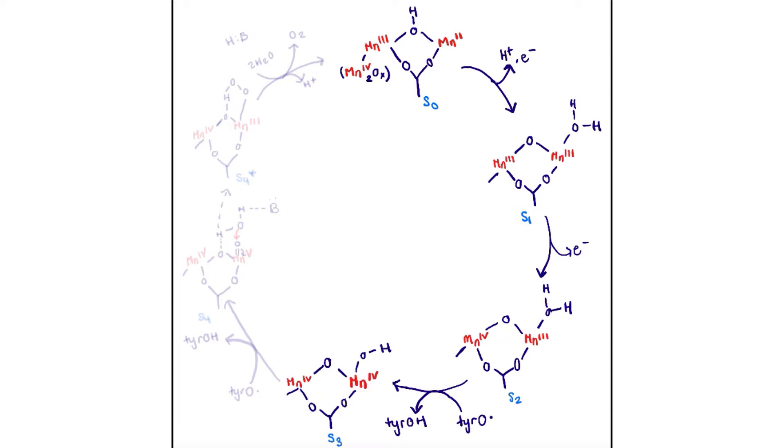From the S1 state to the S2 state, there is another redox reaction taking place. Manganese 3+ is oxidized to manganese 4+, and the electron gets lost to P680.